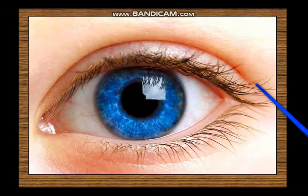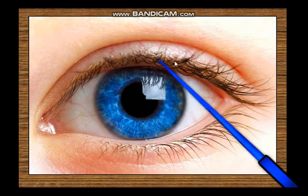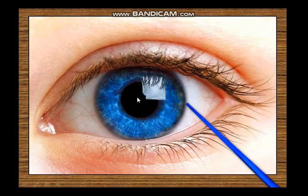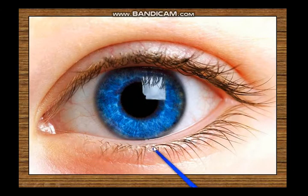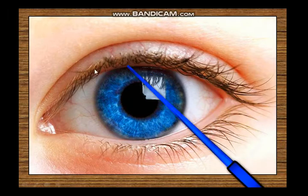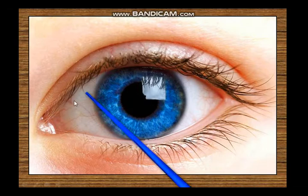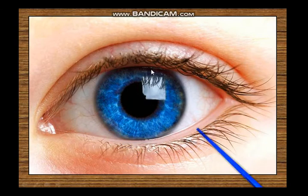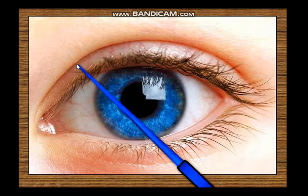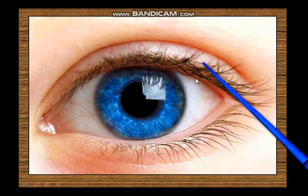Today we are going to study the eyeball. This is a picture of the eye as seen from the front. You can see the upper eyelid, the lower eyelid, the rows of eyelashes, the medial angle — also called the medial canthus — and the lateral angle, called the lateral canthus. The gap between the eyelid margins is called the palpebral fissure. A small part of the eyeball is visible through the palpebral fissure, while the larger part is hidden inside the orbit.